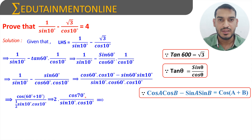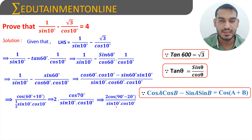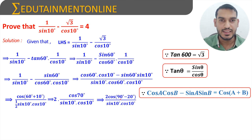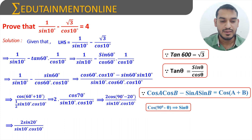We convert cos 70 degrees by writing it as cos(90 degrees minus 20 degrees), all over sine 10 degrees into cos 10 degrees. Since cos(90° − θ) gives sine of θ and 90° is an odd angle, we can write this as 2 sin 20 degrees by sine 10 degrees into cos 10 degrees.